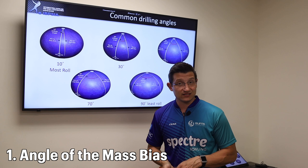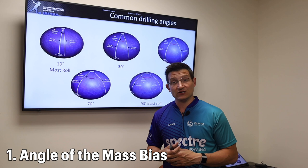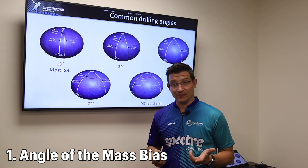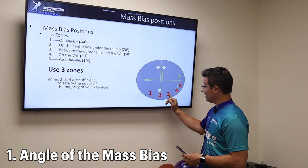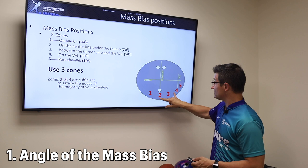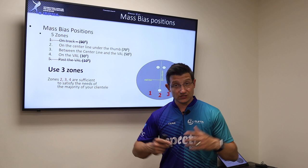We'll go over that more in a different course covering what the determinator does after a drilled bowling ball. For the general population, in terms of layouts, you want to try to stick with between 30 and 70 degrees of a mass bias angle. Basically this translates to either under the thumb, in between the thumb and the VAL, or on the VAL — equivalent to 70, 50, and 30 degrees. These three will be the most common you'll use in your pro shop for most of your clientele. You could go with 10 and 90, which are the extremes, but tread carefully there.